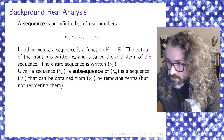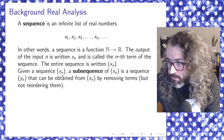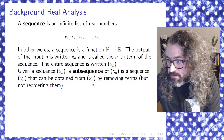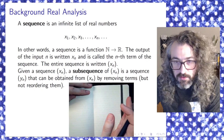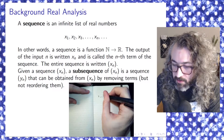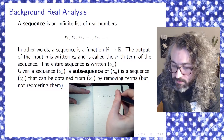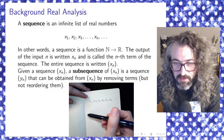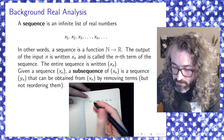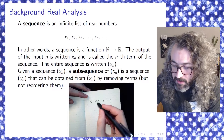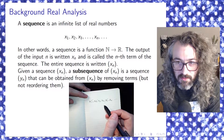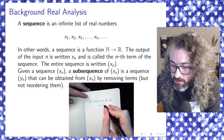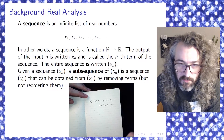Subsequences. So given a sequence x sub n, a subsequence of that sequence is a new sequence y sub n that can be obtained from the first sequence by removing terms, but not reordering them. So just to try to make that crystal clear — if I've got a sequence x1, x2, x3, and so on, to get a subsequence I'm just going to remove some terms. You can just remove them kind of randomly. As long as you've got infinitely many terms left over, the leftover terms give you a subsequence. So like x3 you could call y1, x4 you can call y2, x6 that would be y3 — whatever terms are left over, that's the subsequence.